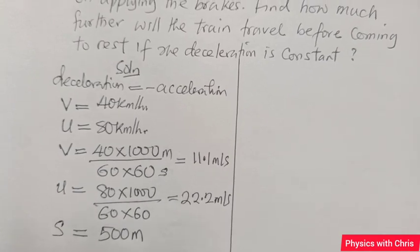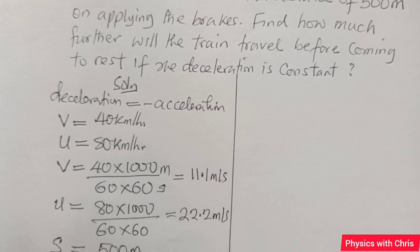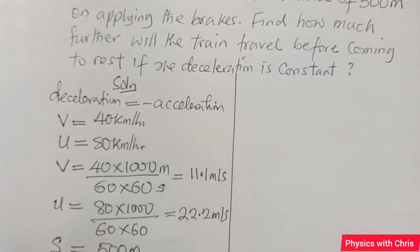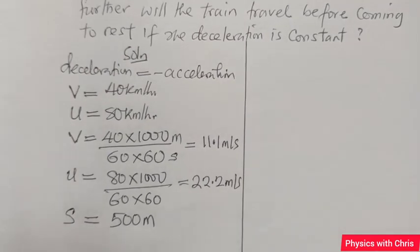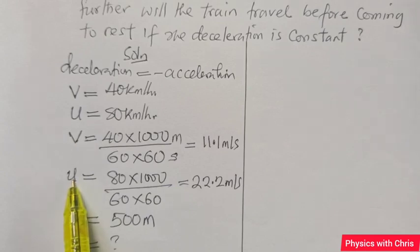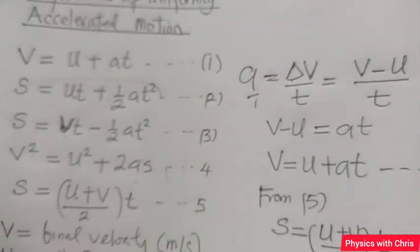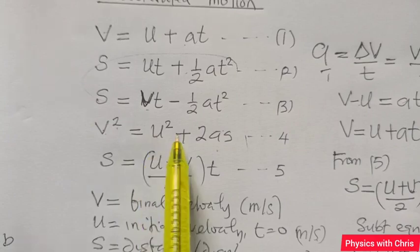To solve the problem and find how much further the train will travel before coming to rest with the same constant acceleration, let's find that acceleration. We have to find the acceleration first. We go back to the equations of motion. We have v final, the initial, the distance covered, and the acceleration. I will make use of equation 4: v² = u² + 2as.